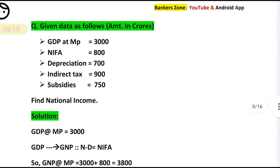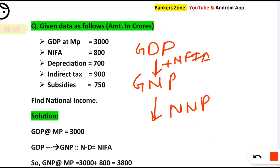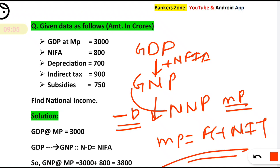Let me repeat the steps. From GDP to GNP — domestic to national, you add NFIA. From GNP to NNP — gross to net, you subtract depreciation. To move from market price to factor cost, market price is factor cost plus net indirect taxes, so subtract NIT to get factor cost. This is the key rule to remember.